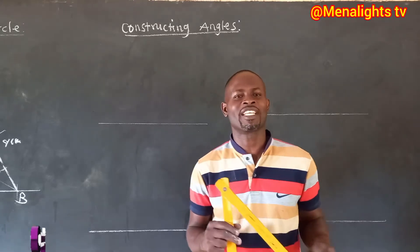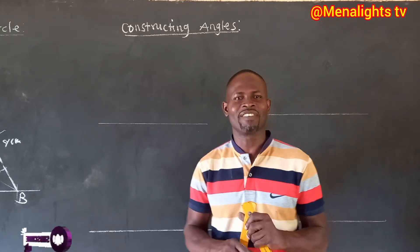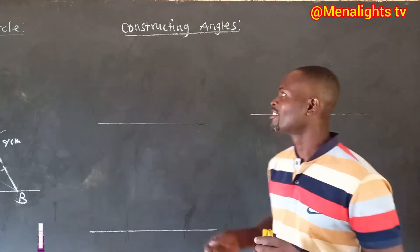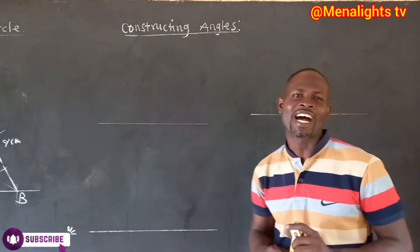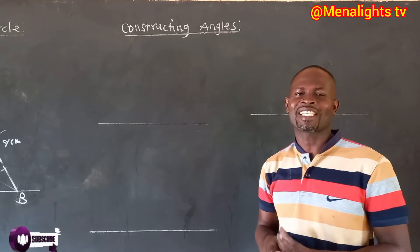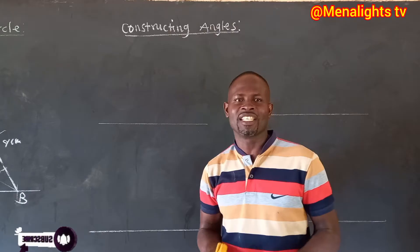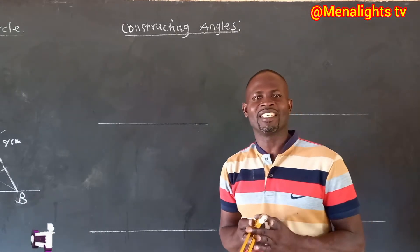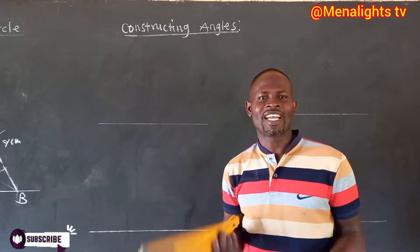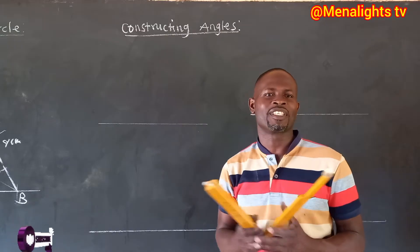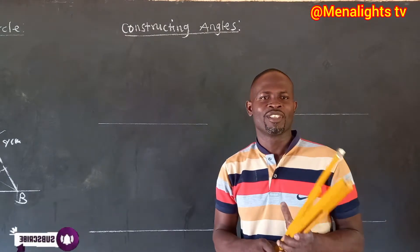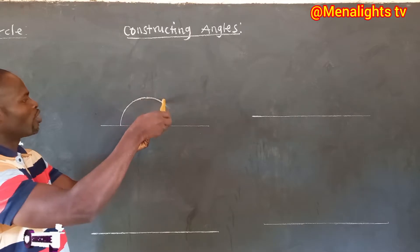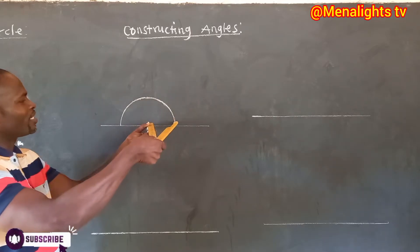Welcome once again to Manalize TV. This time we are looking at constructing angles, starting with constructing angle 60 degrees, then from there angle 30, 90 degrees and 45 degrees. So let's get going. We start on point A and draw a semi-circle.